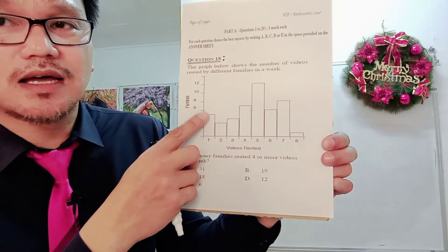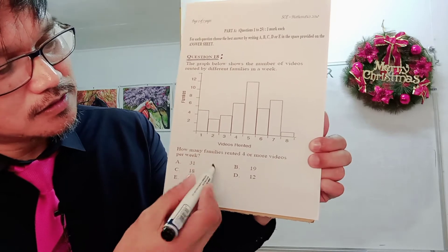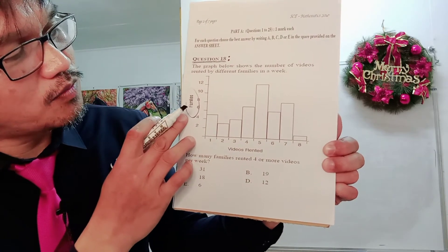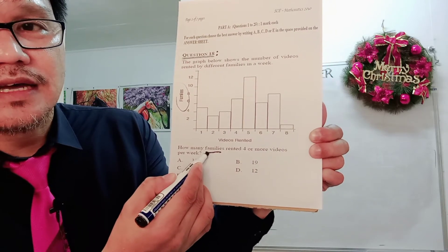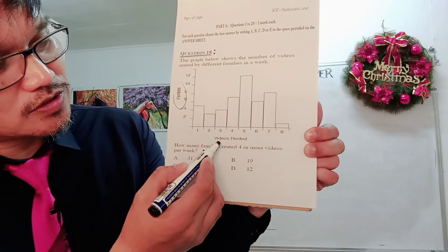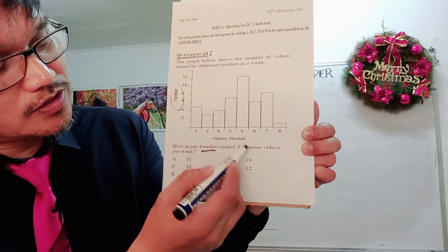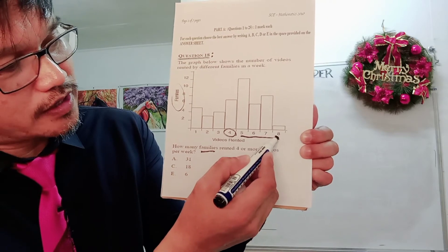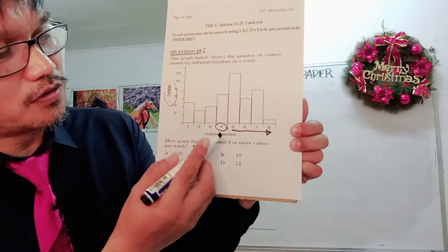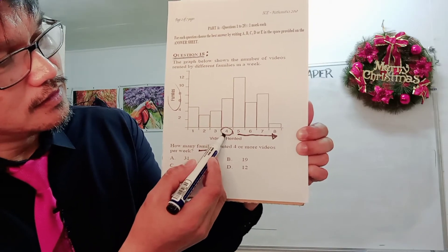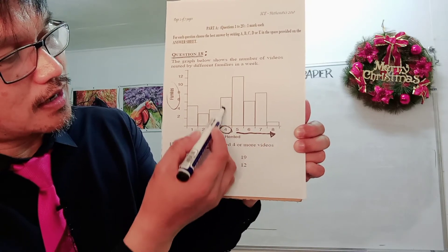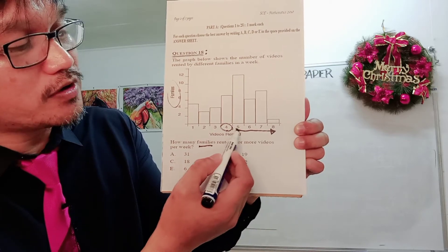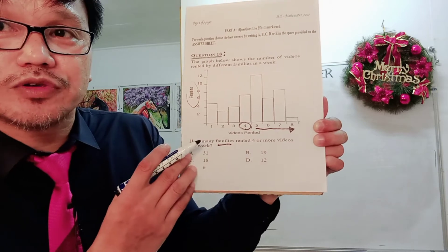The question from this graph is: how many families rented four or more videos? The families are on the y-axis, so the answer will come from there. Videos rented are on the x-axis. Four or more means starting from four videos going to the right side — from four videos and up to more than four videos rented. That is how you are going to read it.